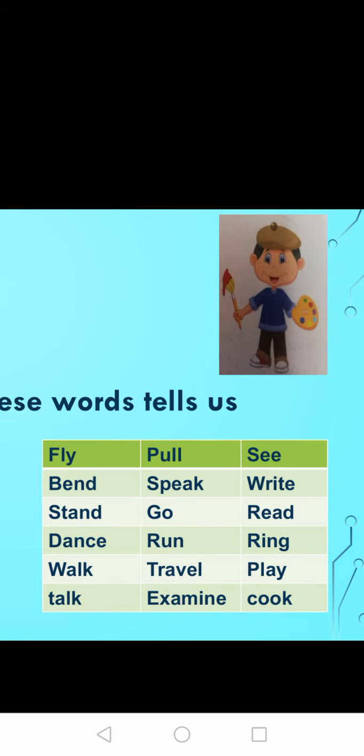Let us see some examples. Fly — fly is also a verb. Birds are flying, so birds are doing the work of flying, so that is fly. Pull — P-U-L-L — pull. What are the boys doing? Boys are pulling the door, so pulling is an action. See — you are able to see things, you are looking at things. So see is a verb, an action.